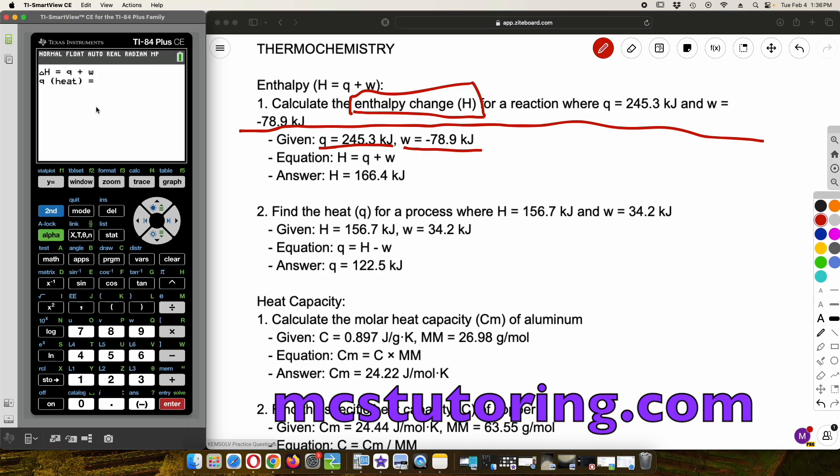And then first, what is the Q? We're going to enter it as 245.3. We don't enter the units because the program is not that sophisticated yet. This is early February 2025. Maybe it gets more sophisticated as we go on. But for now, that's what we have. Also, just for the W, when we enter something that's negative, we're going to use this negative key below the 3 to the left of the enter key and to the right of the decimal place. So it's negative 78.9. And then the cool thing, it gives you the equation here, right? H equals Q plus W.